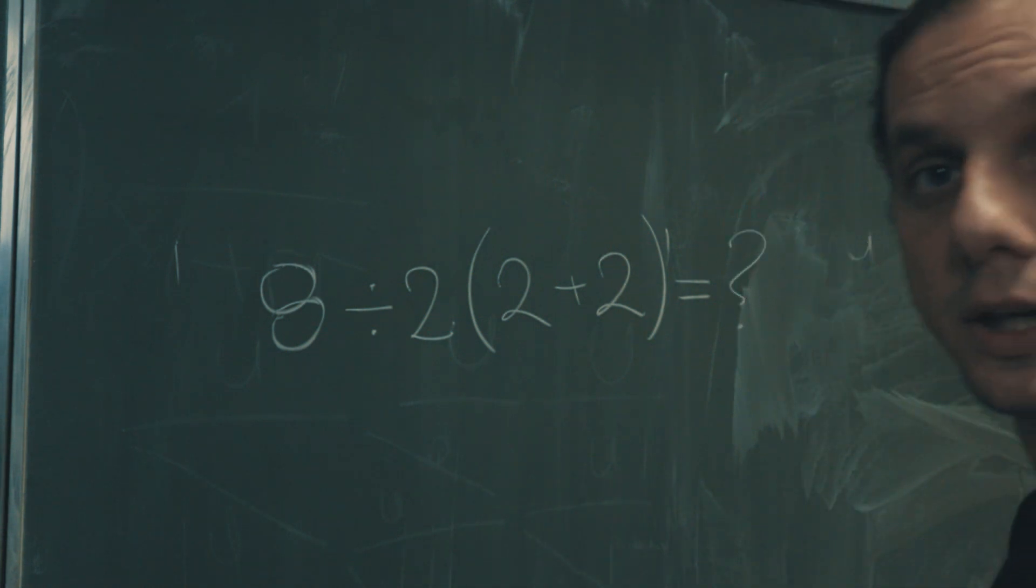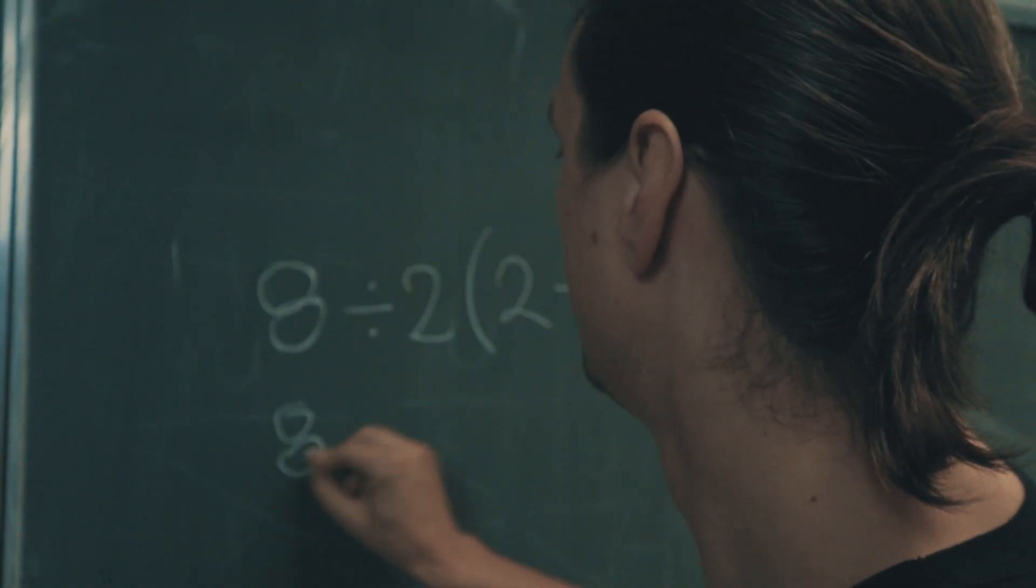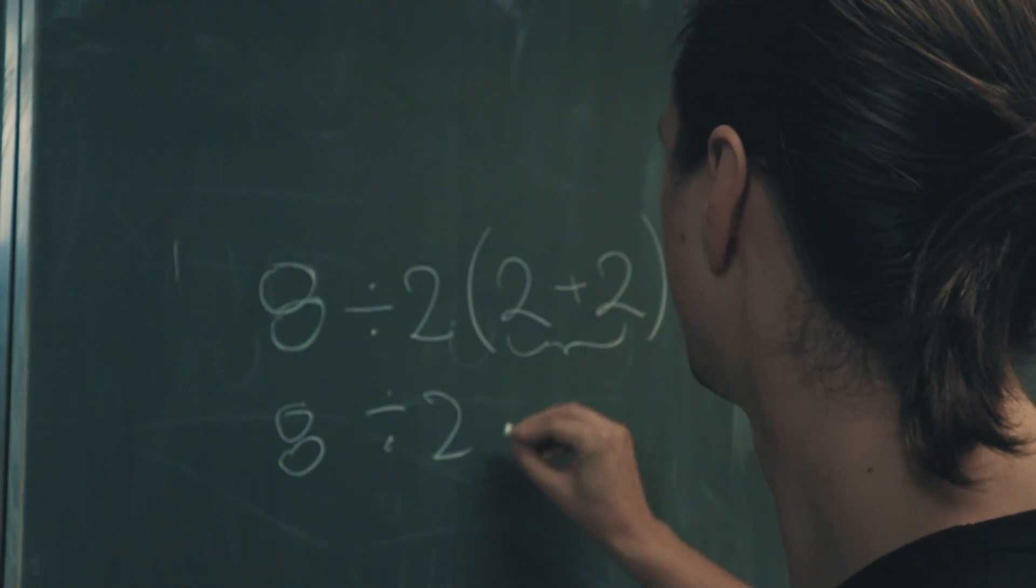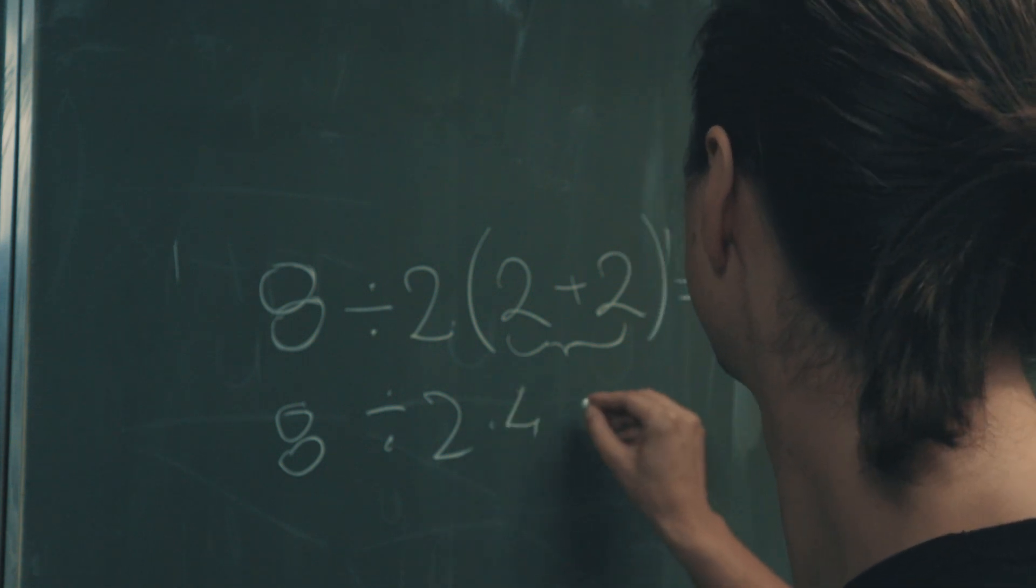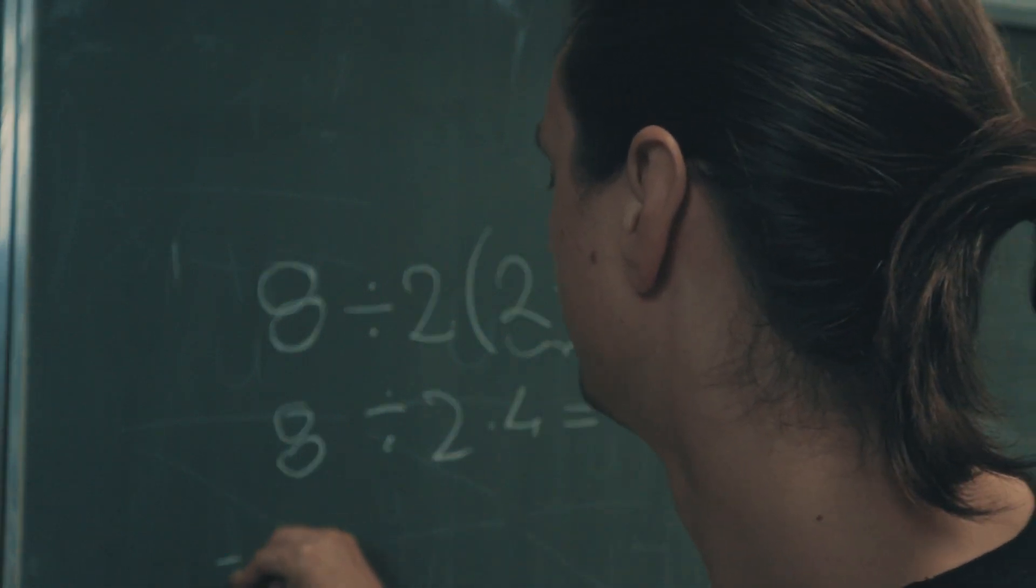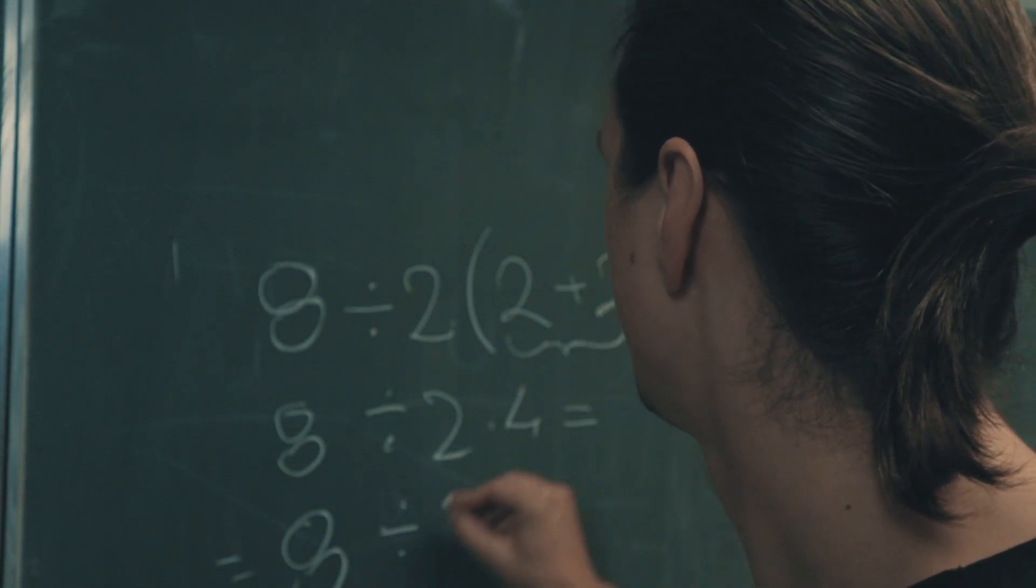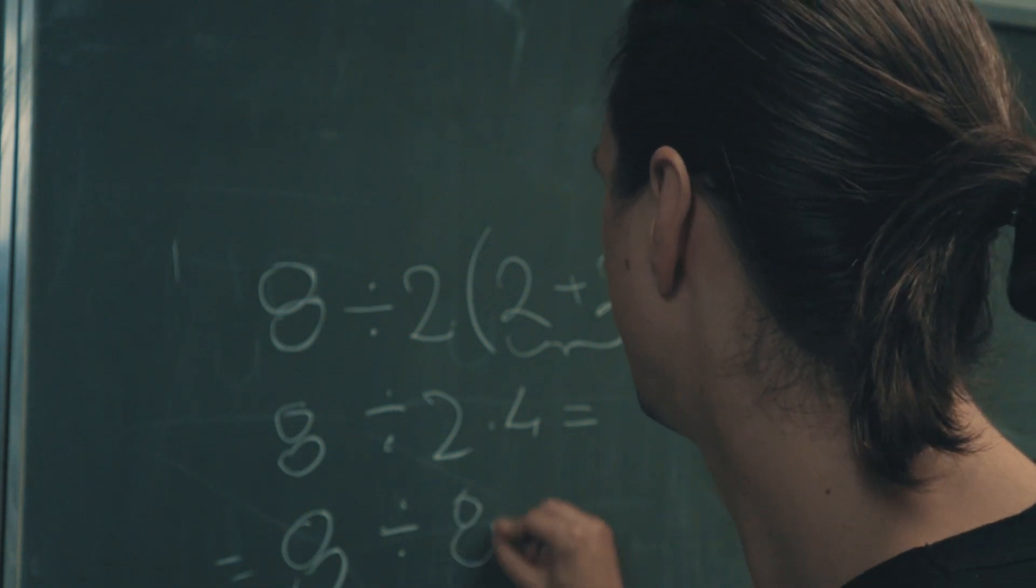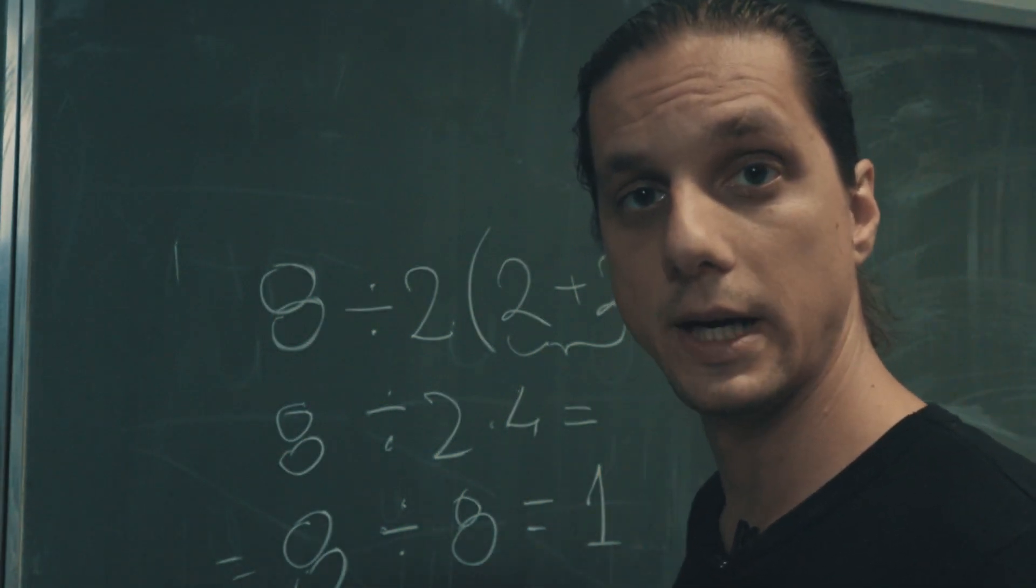I hope you solved it like this. You said 8 divided by 2 and then of course you said 2 plus 2 equals 4. This is multiplied here. That equals 8 divided by, and then 2 multiplied by 4 is 8. 8 divided by 8 is 1. If you got 1, that's correct.